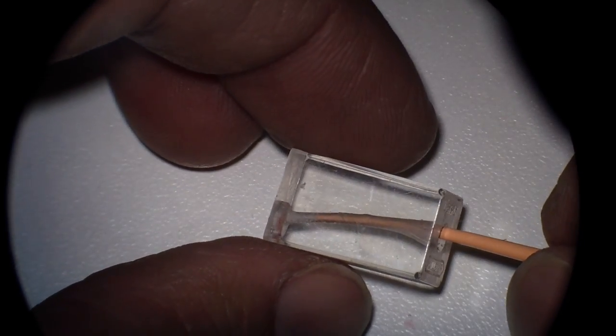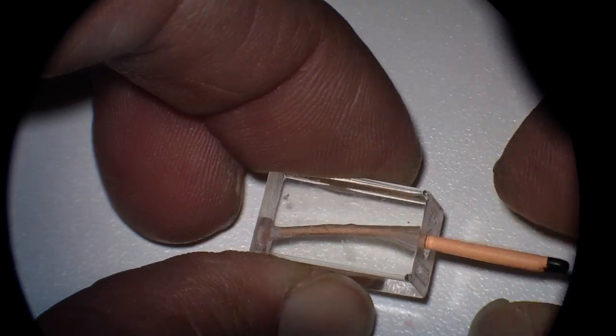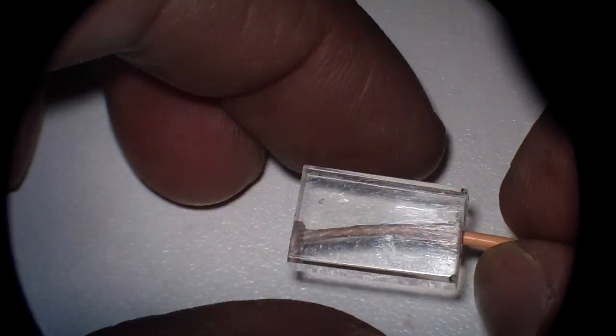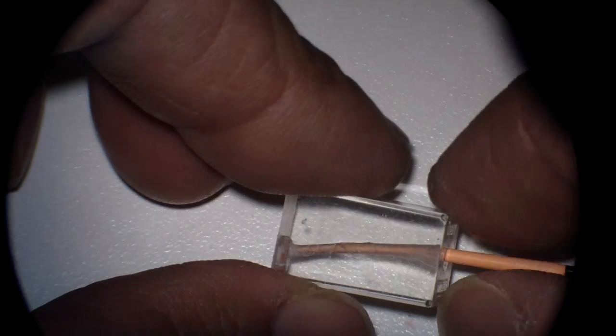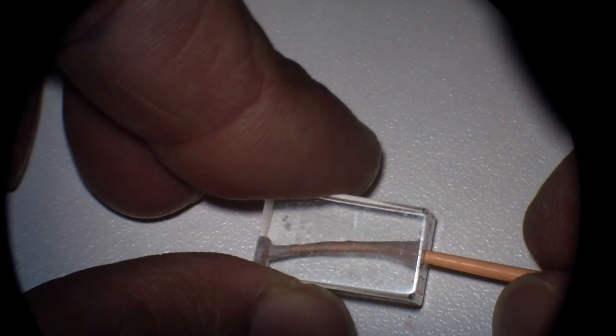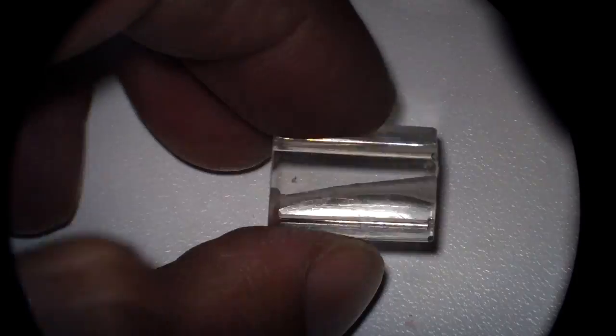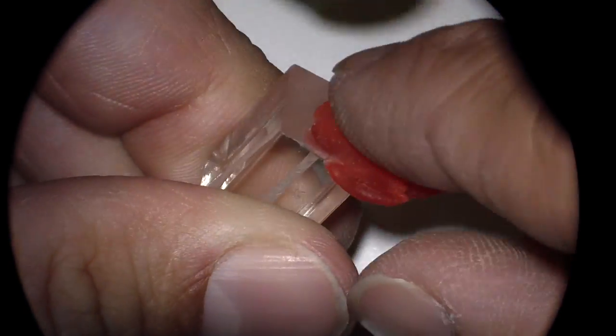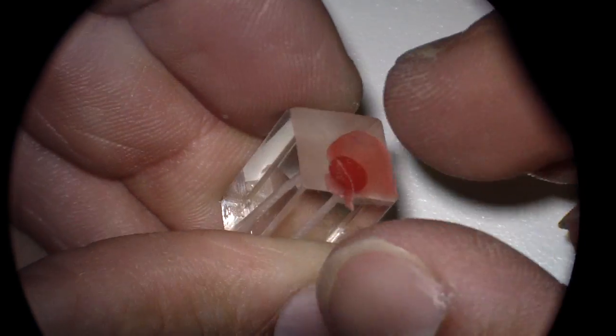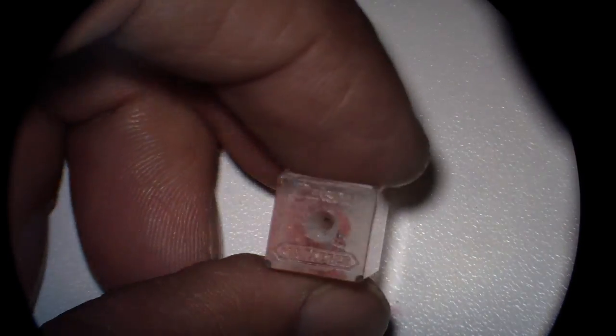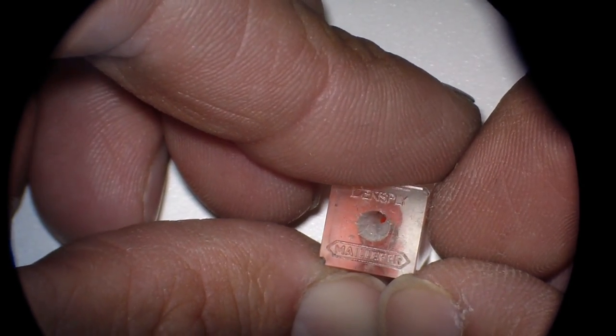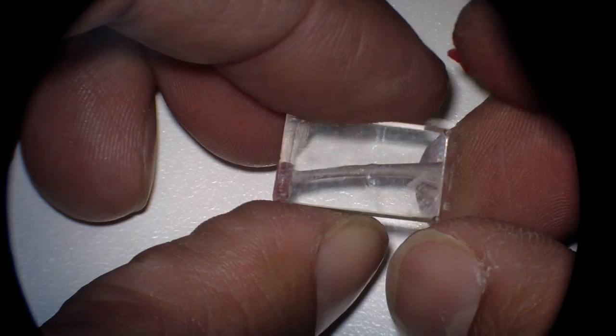Then I take a gutta percha point and place it to approximately one millimeter back from the place that I want the gutta percha. This is going to be used as a tamping device in a sense, along with my file. And then we're going to place some wax. Okay, there we go. So there is what you see from the coronal portion and from the side.